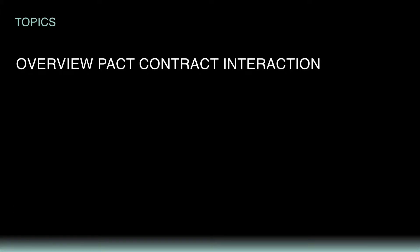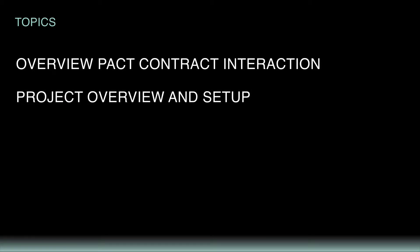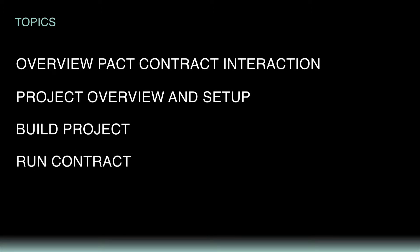First, I'll overview Pact Contract Interaction. From there, I'll overview a project we'll work on and set up our project environment. Next, you'll write some code in each of the project files, and when you're done, you'll run the smart contract for yourself from your terminal. We'll start with some of the basics, then build an example smart contract that uses the functionality of multiple Pact modules.